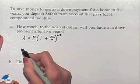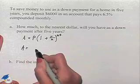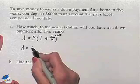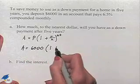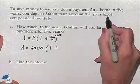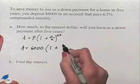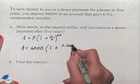We're trying to find out the value for A, and we substitute in our value for P as 6,000. That's our principle. One plus our r value, we're going to change 6.5% to its decimal format, 0.065.